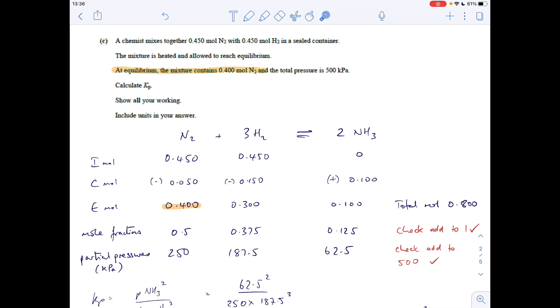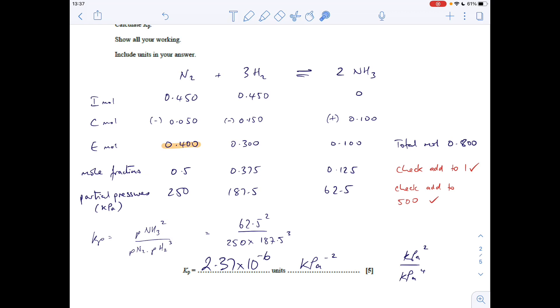The partial pressures now - just a reminder that these are all in kilopascals because the total pressure is. It's mole fraction times total pressure: 0.5 times 500 gets you 250, 187.5 for hydrogen, 62.5 for ammonia. Another check: the partial pressures have to add up to the total pressure of 500, and these do as well.